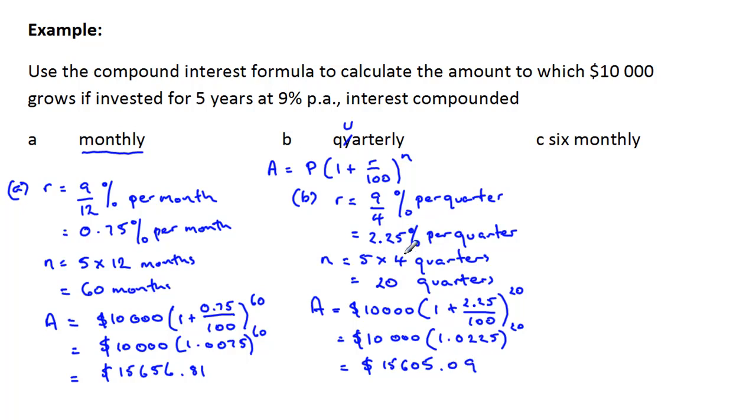Now it's interesting to notice this, that the same amount invested gets more when it's compounded monthly than when it's compounded quarterly. And that's because your interest accrues a little quicker. And you can see there's a considerable difference between the two. And we would imagine six monthly, the number will be less again because it's compounded twice a year instead of four or 12 times a year.